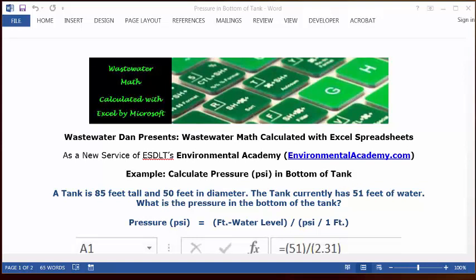So we need height of water level and the standard conversion factor to solve for psi. So psi is going to equal feet of the water level divided by that standard conversion factor from water level to psi.